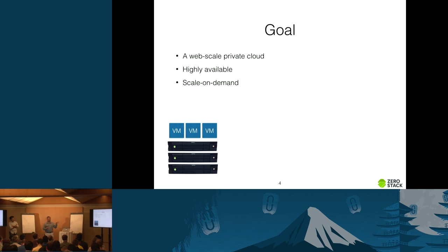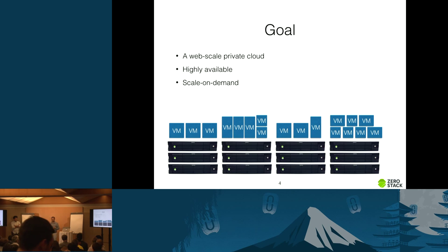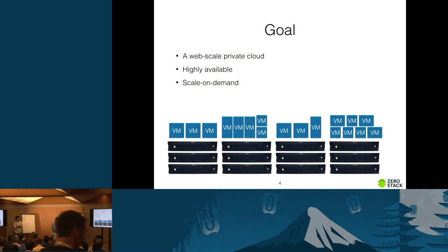For the purposes of this talk, the high-level goal is: enterprises want a web-scale private cloud that is always available, where they can start small and grow based on demand. You should not have to start with a very large cloud — you can start small and add more nodes as your needs grow.